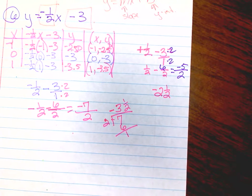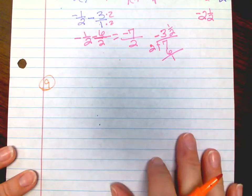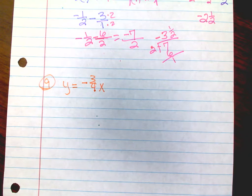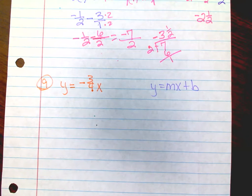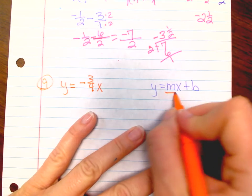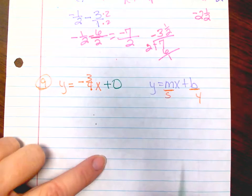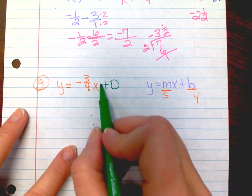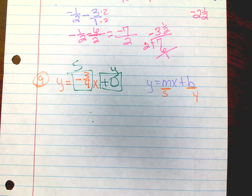Let's look at number nine. We have y equals negative three-fourths x. Again, what was our formula? y equals mx plus b. m is your slope and b is your y-intercept. But again, you're looking and you're like, I don't see a b. Well, if I add plus zero, now you would see your b — your y-intercept. This line is going to go through the origin. Your y-intercept is zero. Your slope is negative three-fourths. So let's graph it.